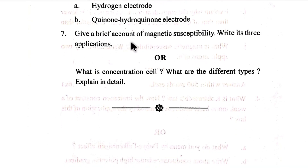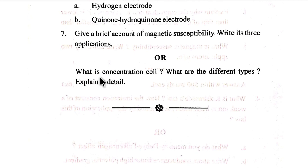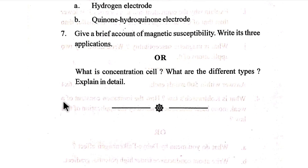Number seven: Give a brief account of magnetic susceptibility and write its three applications. What is a concentration cell? What are the different types? Explain in detail.